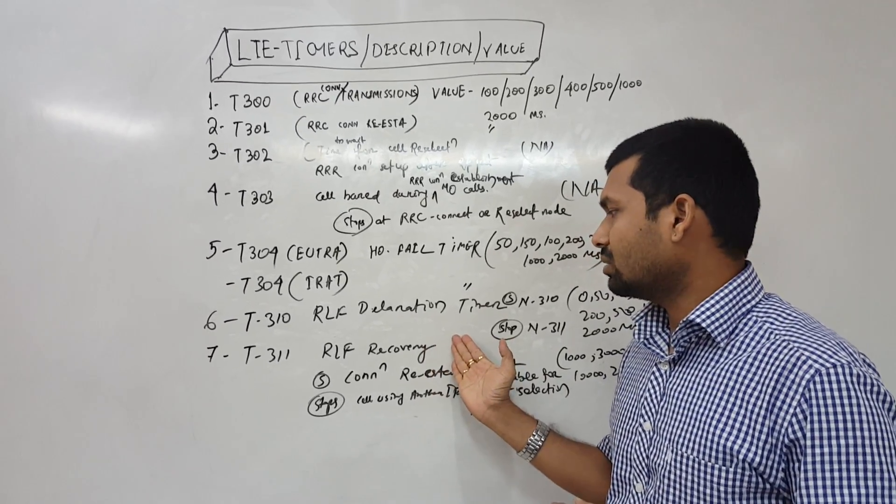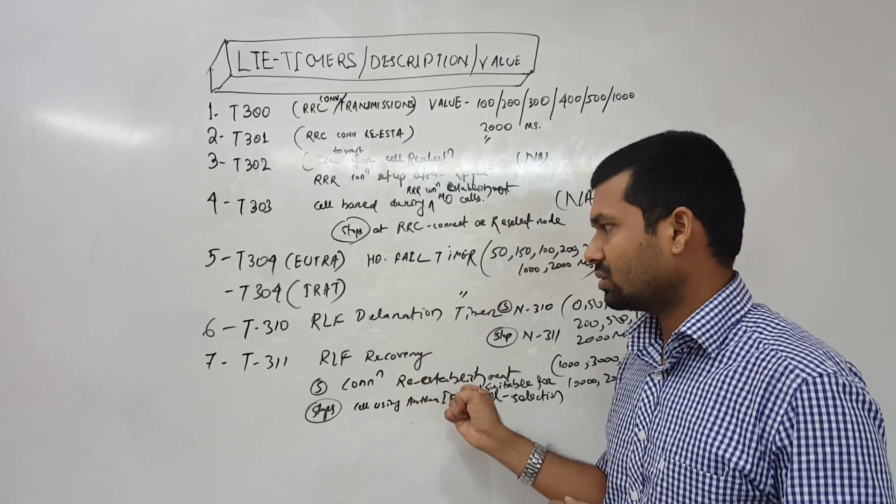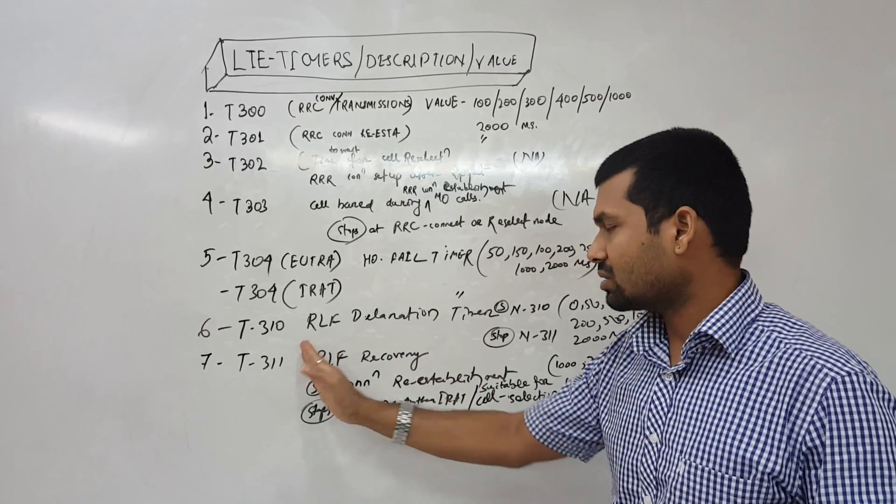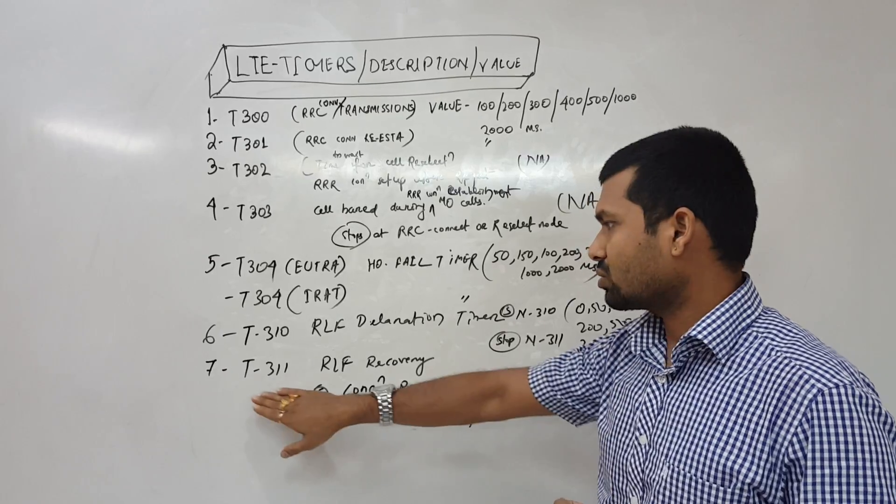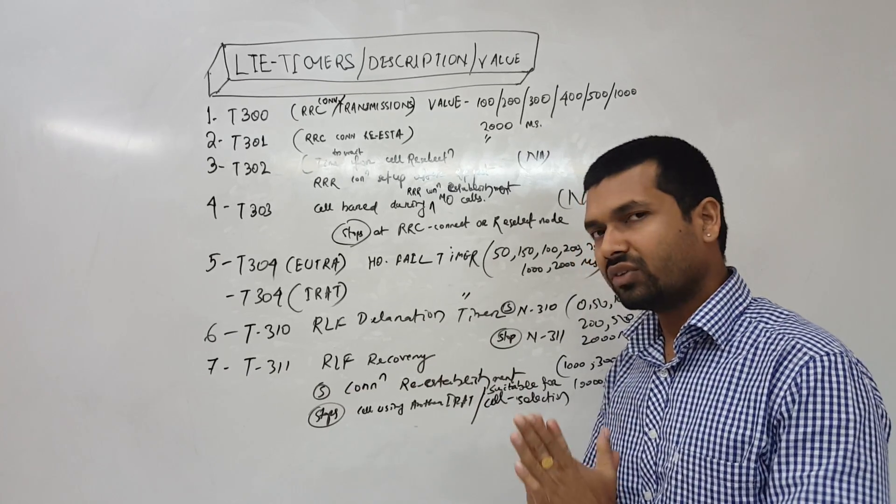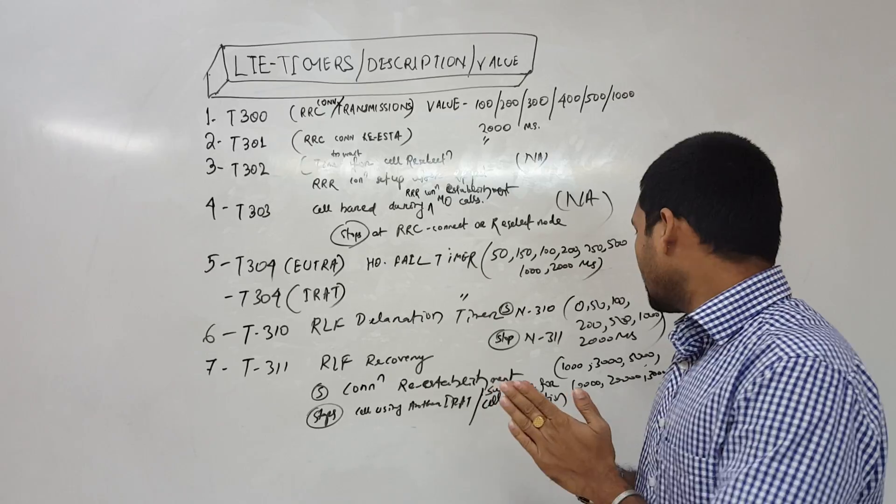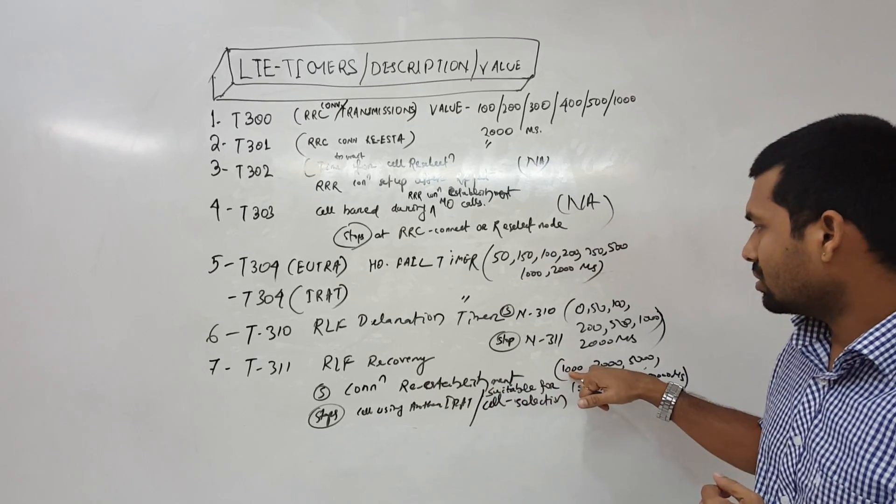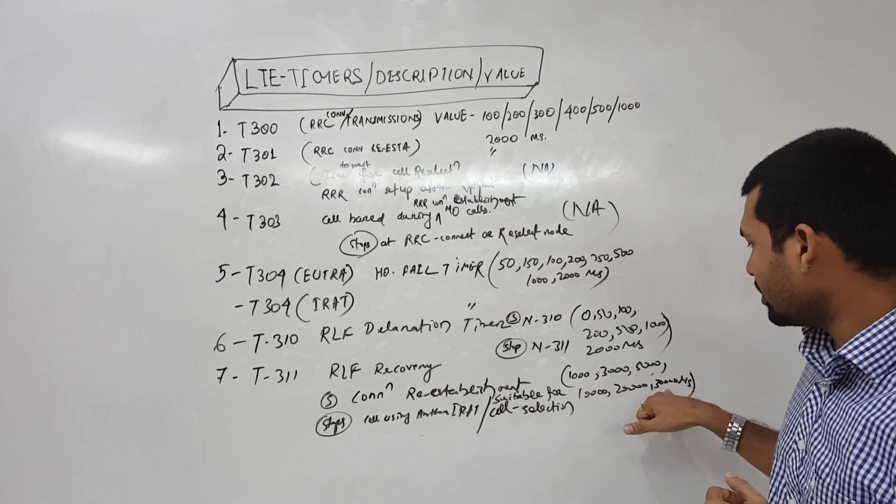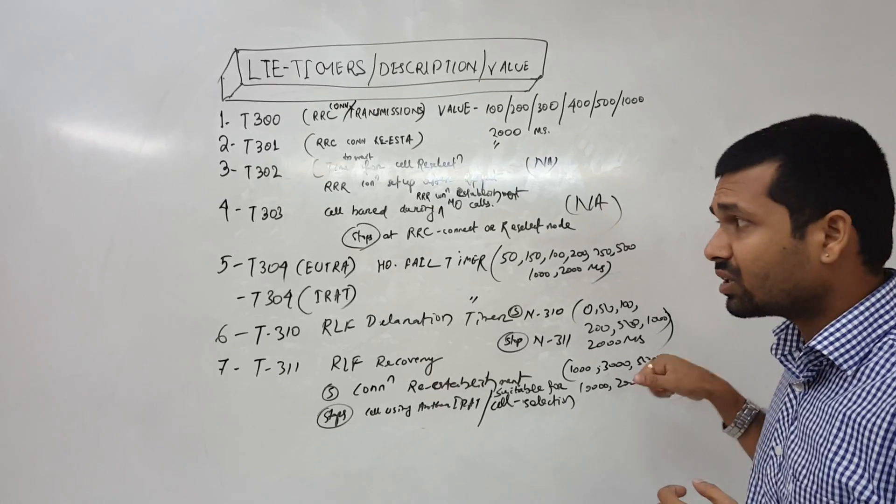But anyways we can recover the radio link and that is monitored here. Timer T311 is for radio link failure recovery. The value is 1000 milliseconds to 30,000 milliseconds as per the operator's requirement.